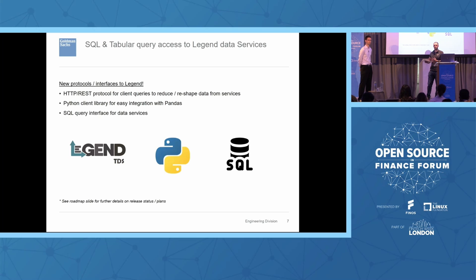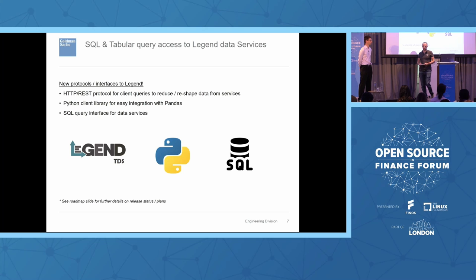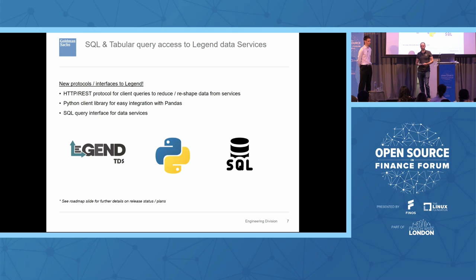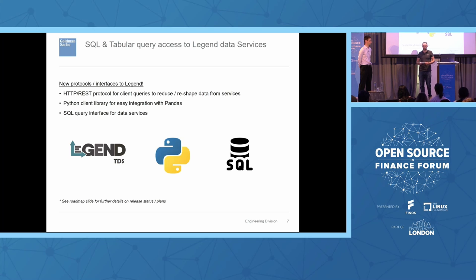Built on top of the TDS protocol are client libraries. The Python library and the SQL library both aim to give a natural, native feel. In Python, you're writing Python code as you'd normally write. In SQL, you're writing or interpreting SQL. The Python library is directly integrated with data frames — you create a frame on an input and push down further operations using lambda expressions. In SQL, similarly, you write SQL expressions where the FROM statement references your input source, like a Legend service you want to execute.